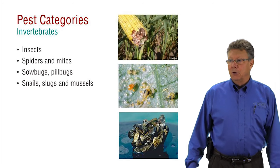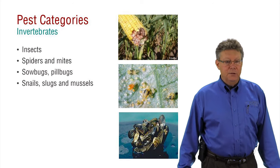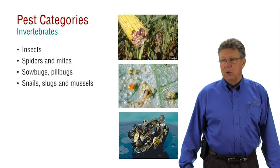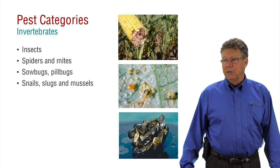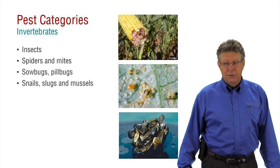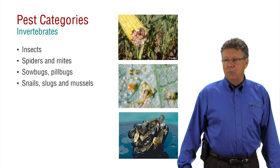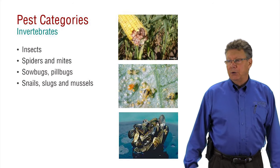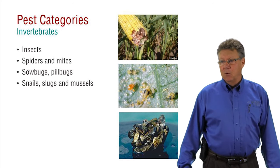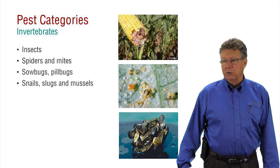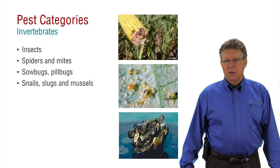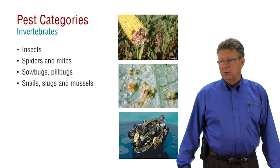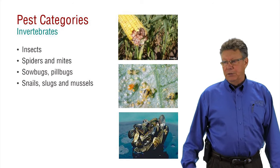Invertebrate pests include a wide variety of insects like aphids, caterpillars, grubs, and wasps. Invertebrates also include the insect cousins: spiders and mites, sow bugs and pill bugs, and snails, slugs, and mussels. Pictured here are western bean cutworm larvae, which is in the immature stage of a moth; plant feeding mites as seen from under a microscope; and zebra mussels, an aquatic invasive species.